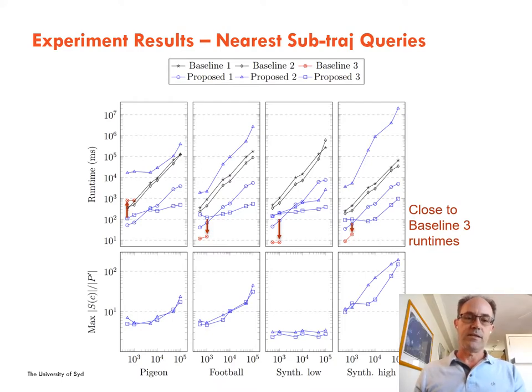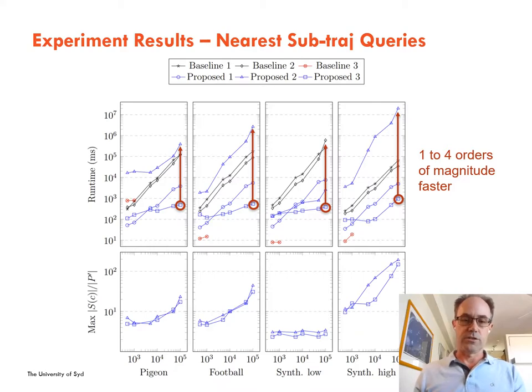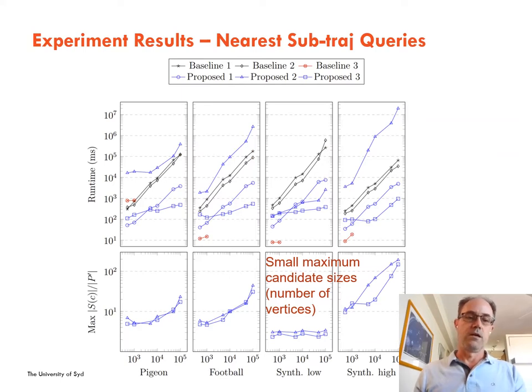When the size of P is smaller, our query algorithm is closer to baseline 3 run times, and with one of the datasets, it's actually faster. And when P is larger, our query algorithm is one to four orders of magnitude faster than others. Also, the sub-trajectory candidates that are created during the query are smaller in size, which helps speed up the algorithm.